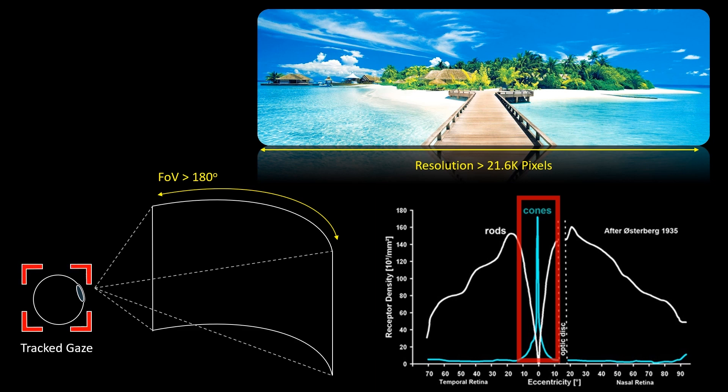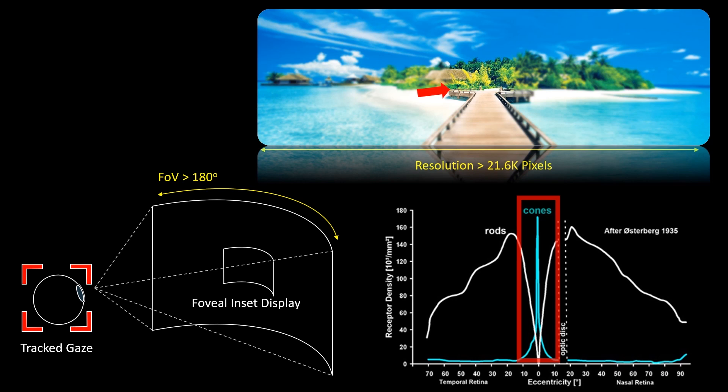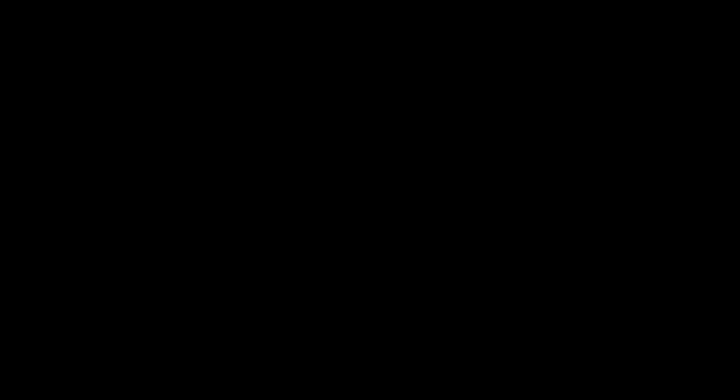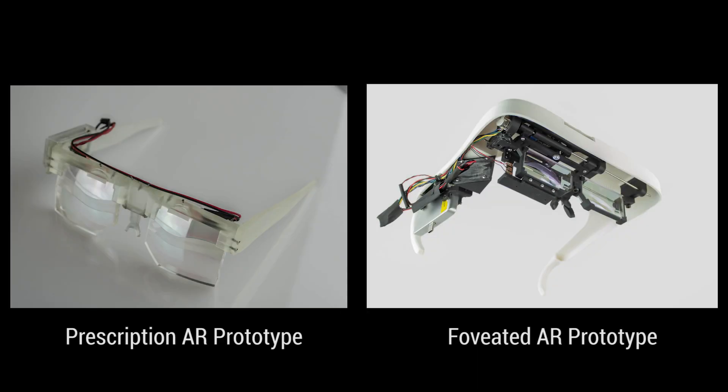By combining a low-resolution image in the user's periphery with high-resolution inset in the fovea, we can better match the display's output to the human visual system's performance. In this installation, we demonstrate two novel wearable augmented reality prototypes inspired by the human visual system: foveated AR and prescription AR.